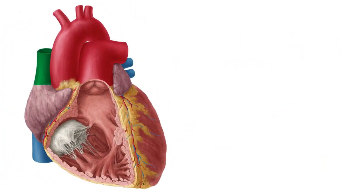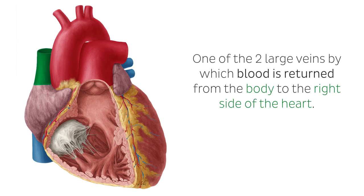The SVC is one of the two large veins by which blood is returned from the body to the right side of the heart. After circulating through the body systemically, deoxygenated blood returns to the right atrium through either the SVC, which drains the upper body, or the inferior vena cava, which drains everything below the diaphragm.